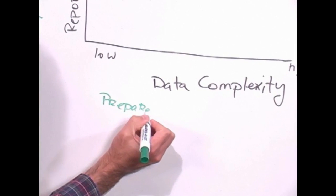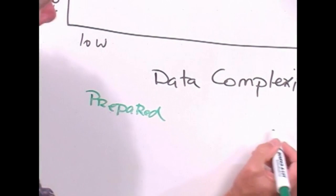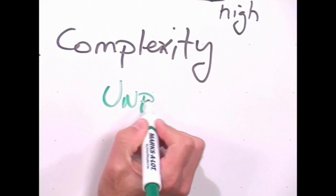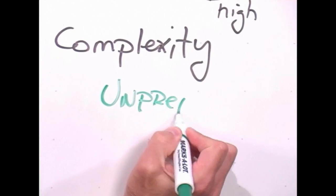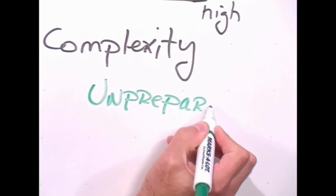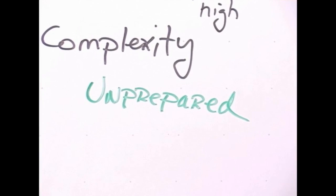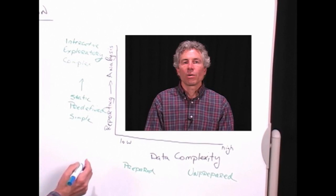On the x-axis, I'm talking about data complexity. And here, the primary difference between an environment that has low data complexity or high is the degree to which the data is prepared, sanitized, and integrated, as I said earlier.